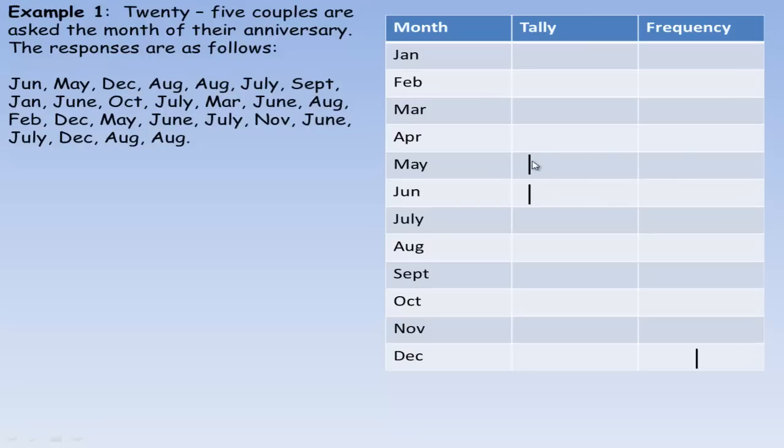May, so we put a mark by May. Then December, and then two Augusts in a row. A July, so we put a mark there. September, a January next, and then June, October, July, a March, June, another August, February, December. A second May, another June, a July, the first November, and then another June. Now there's four Junes, so we make another one with a slash through it, and that symbol means five. Another July, a December, and then two Augusts in a row.